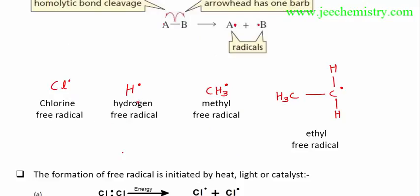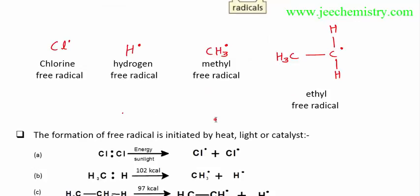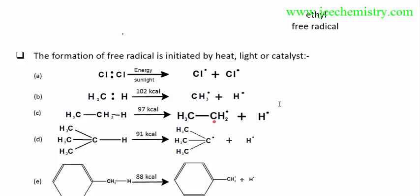Free radicals may be chlorine free radicals, hydrogen free radicals, methyl free radicals, ethyl free radicals — these types of radicals are possible in organic reactions. The formation of free radicals generally requires external conditions such as heat, catalyst, or peroxide like benzoyl peroxide.